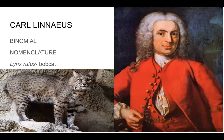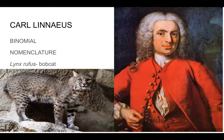Carl Linnaeus gave us two really important tools. The first is binomial nomenclature — binomial means 'two names' and nomenclature means 'naming system.' So he gave us a two-name naming system that is essentially universal across the scientific community. You see a bobcat here — we have them in Seagoville and in Dallas. His scientific name is Lynx rufus. The first name is the genus and the second is the species. It's written in italics, with the first name capitalized and the species not capitalized.